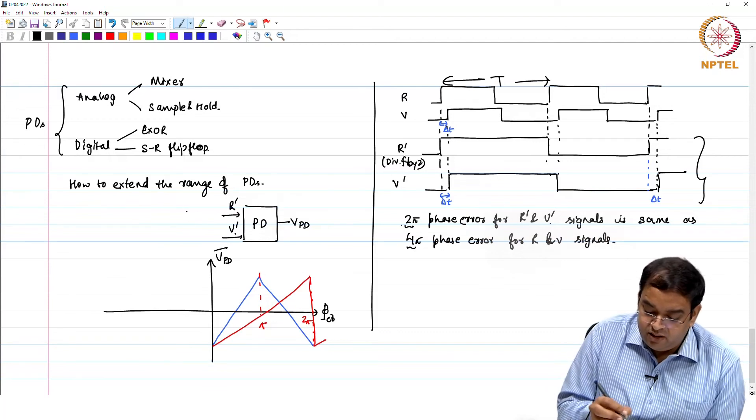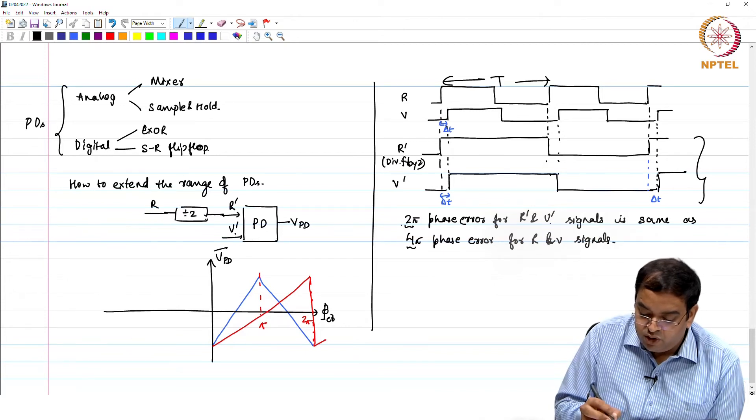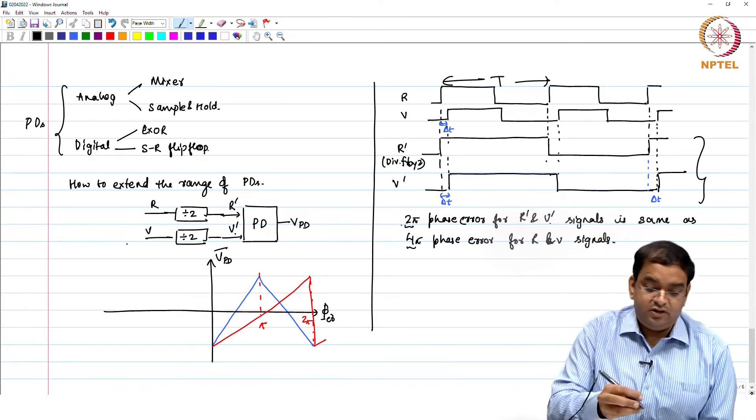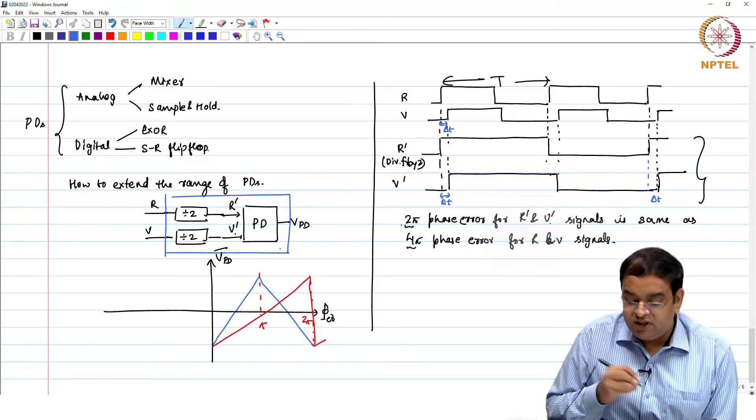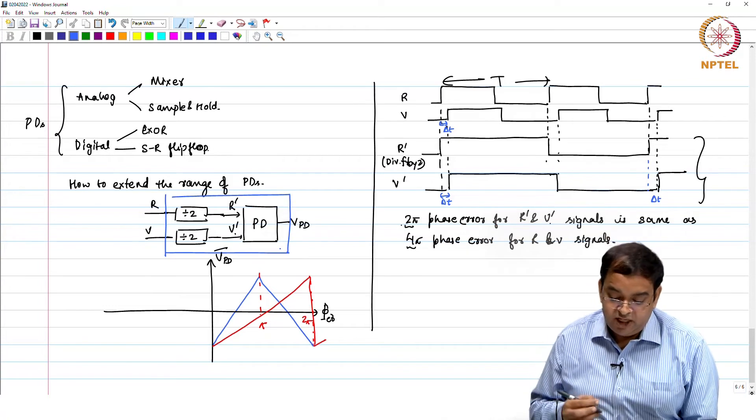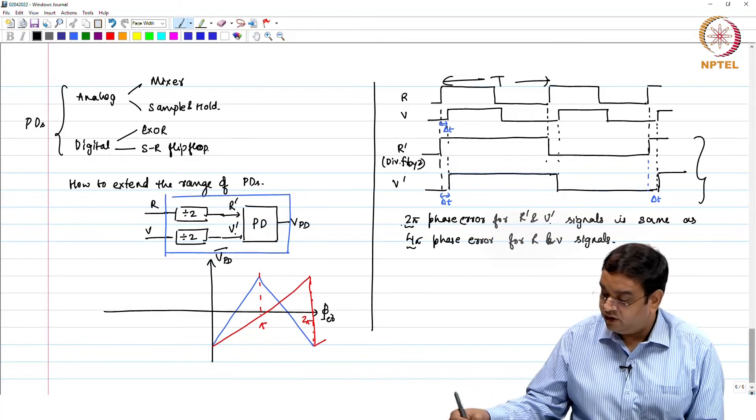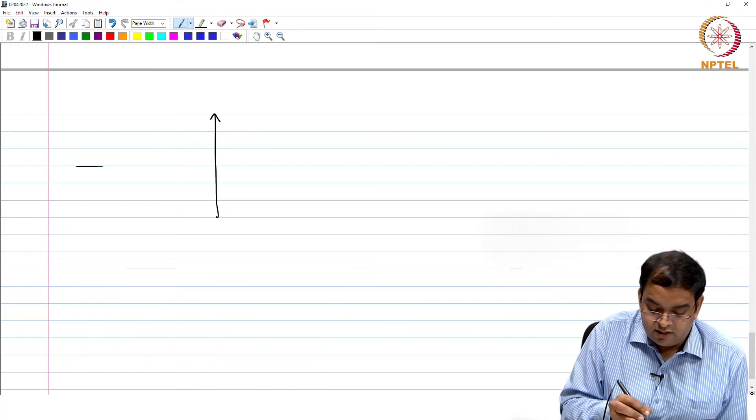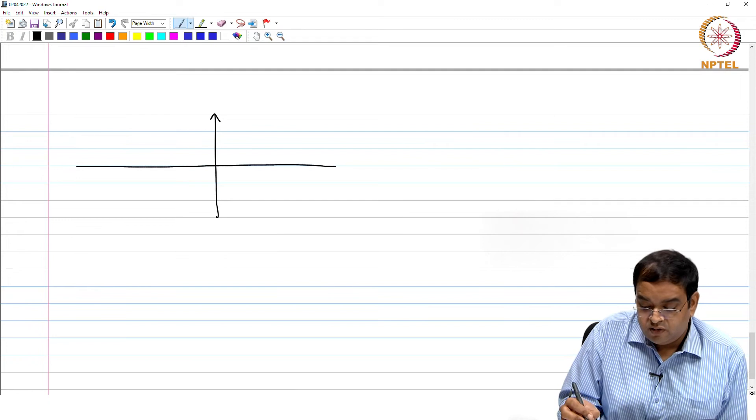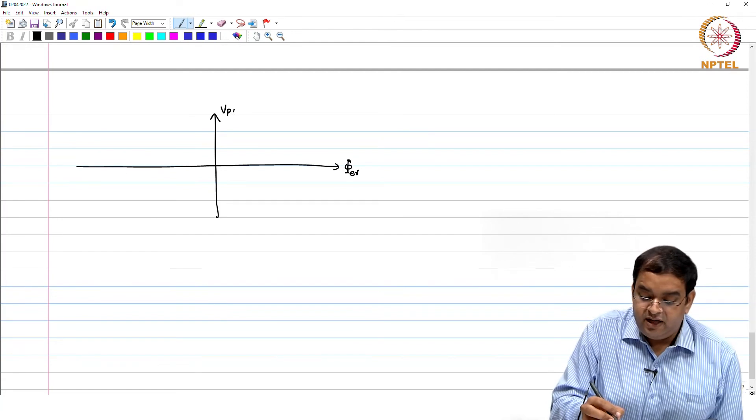So what can be done? If I get my R signal here, I put a frequency divided by 2, and here I put also the frequency divided by 2. So this can be our new phase error detector with extended range. Let me just redraw this. So what we have with the divided, I am going to measure with respect to R and V, my phase error, VPD average.